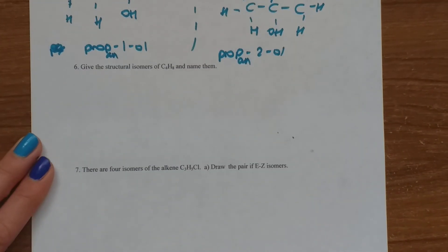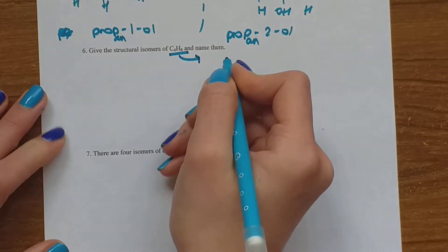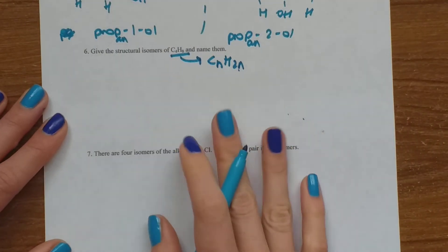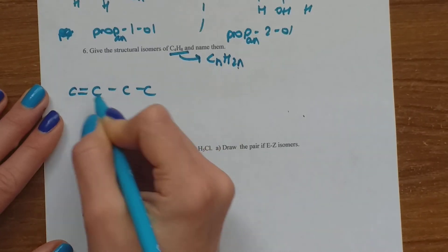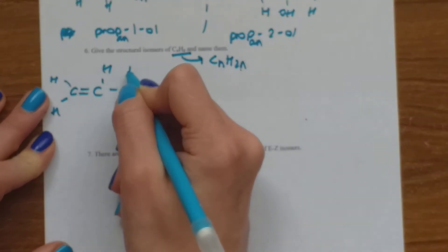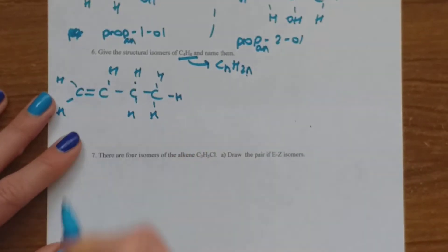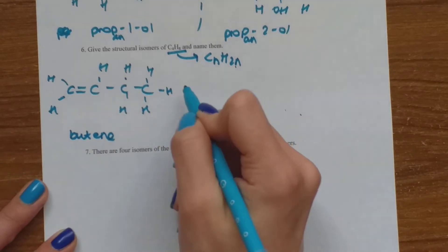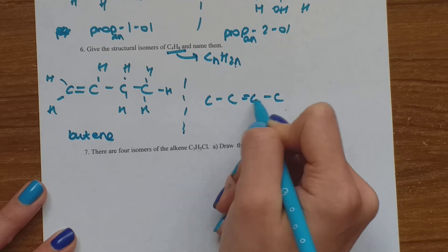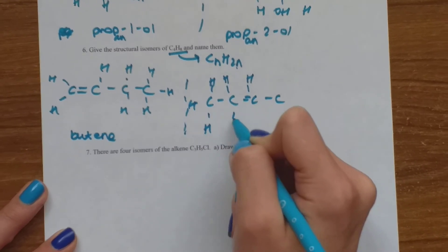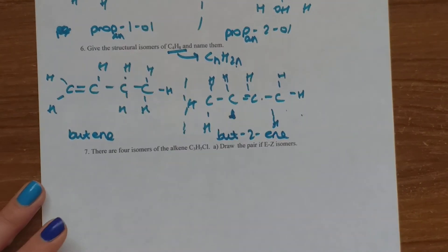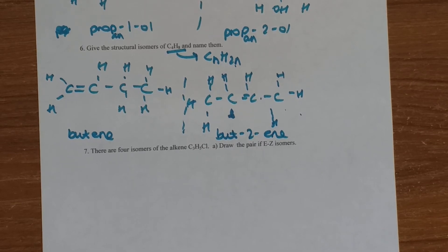The next question says: give the structural isomers of C4H8 and name them. C4H8 — this is our general formula for alkenes: CnH2n, C4H(2×4)=H8, so we know this is an alkene. The first alkene that comes to mind with four carbons is the one with the double bond on the first carbon — that's but-1-ene, because we have four carbons. The other one you can do is move the carbon-carbon double bond to the second carbon, and name it but-2-ene.